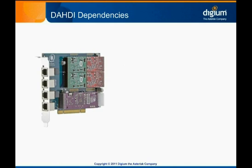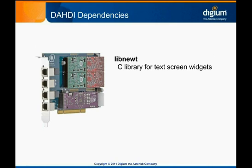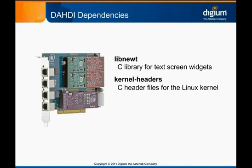DAHDI is used to control our telephony hardware and will need to be installed before Asterisk if your system is going to utilize any Digium hardware. If you plan on having a VoIP-only Asterisk system, DAHDI isn't required, but it is best practice to install it anyway — that way, if you want to add telephony hardware in the future, you won't have to rebuild Asterisk first. DAHDI only requires a couple of packages prior to its own installation: libnewt, which is a C library for text screen widgets, and the kernel development headers, which include the C header files for the Linux kernel. In the YUM package manager, the kernel development package is called kernel-headers. It's important to get the kernel header package that exactly matches the kernel you're running, as DAHDI won't compile otherwise. You'll also need to recompile DAHDI any time you change the kernel.